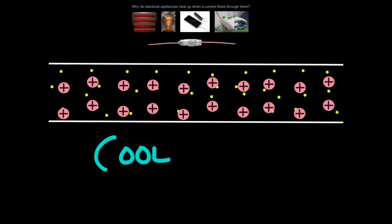So let's first assume that our wire is cool. It's just been switched on and the electrons are flowing. Now because the ions don't have much energy, they're not moving very much, so we have a high current.